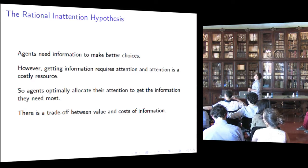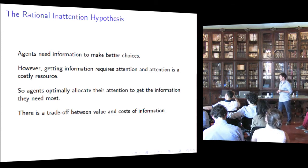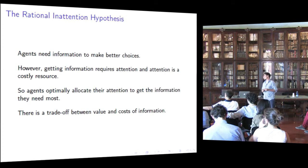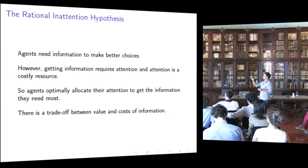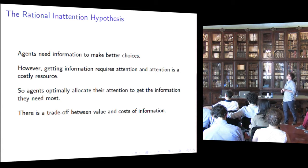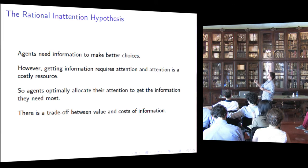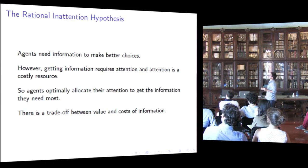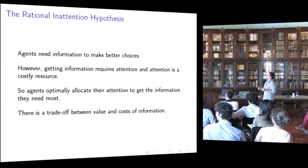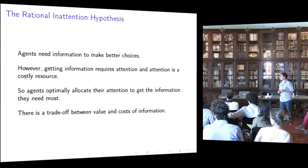Agents need information to make better choices. However, getting information requires attention and attention is a costly resource. So agents optimally allocate their attention to get the information they need most. Bottom line, there is a trade-off between value and cost of information. The inattention is in the fact that attention is costly, while the rationality lies in the fact that attention is optimally allocated.